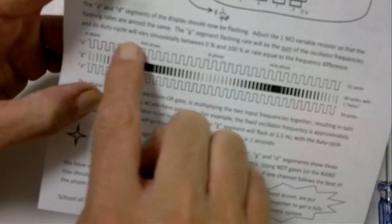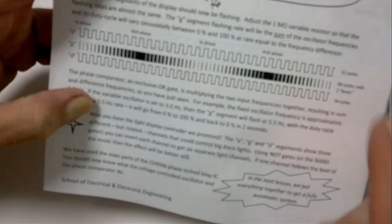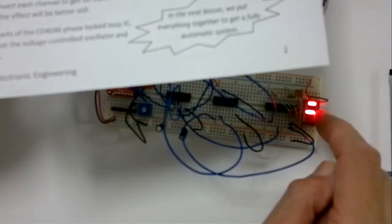Where we have pulses from one of the generators up here, pulses from the bottom generator down here. And if they're not quite the same frequency, then we have a sort of beating effect showing on our middle segment, which is the output of our phase comparator.